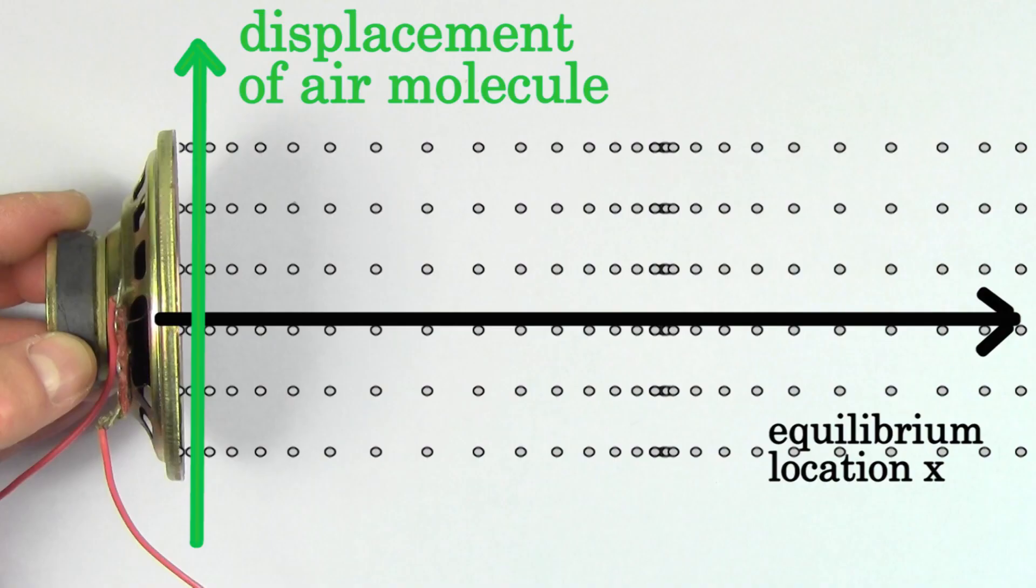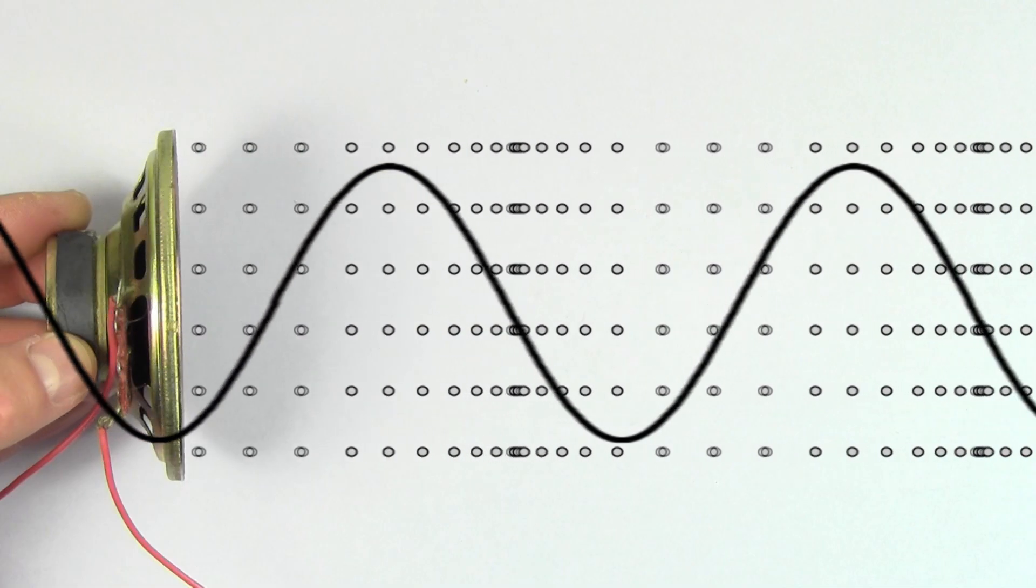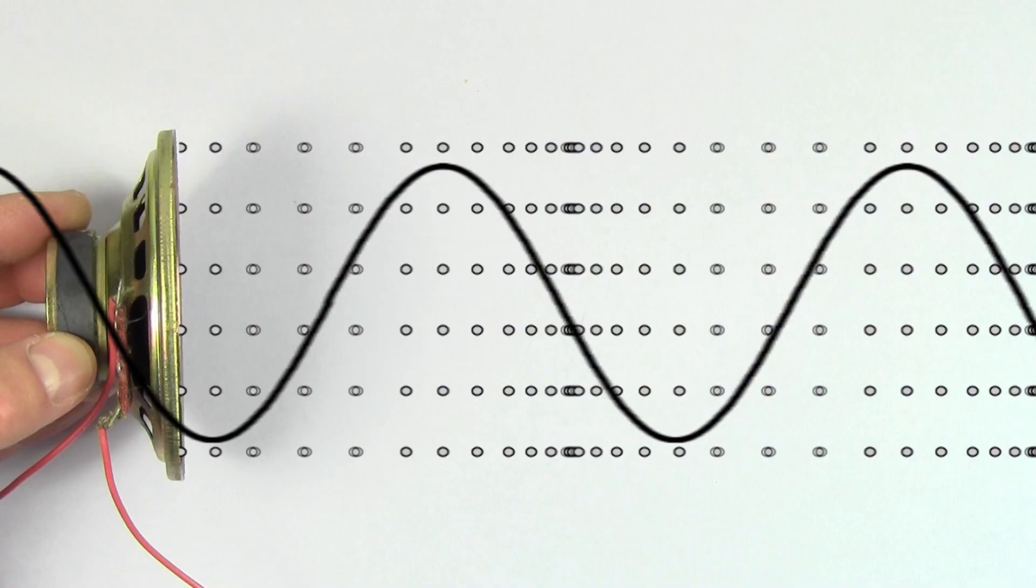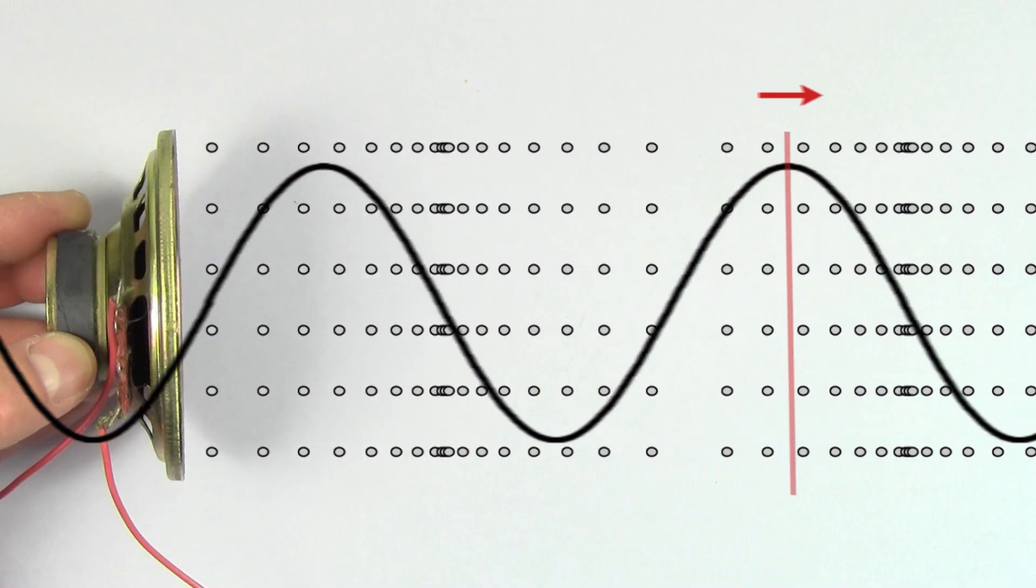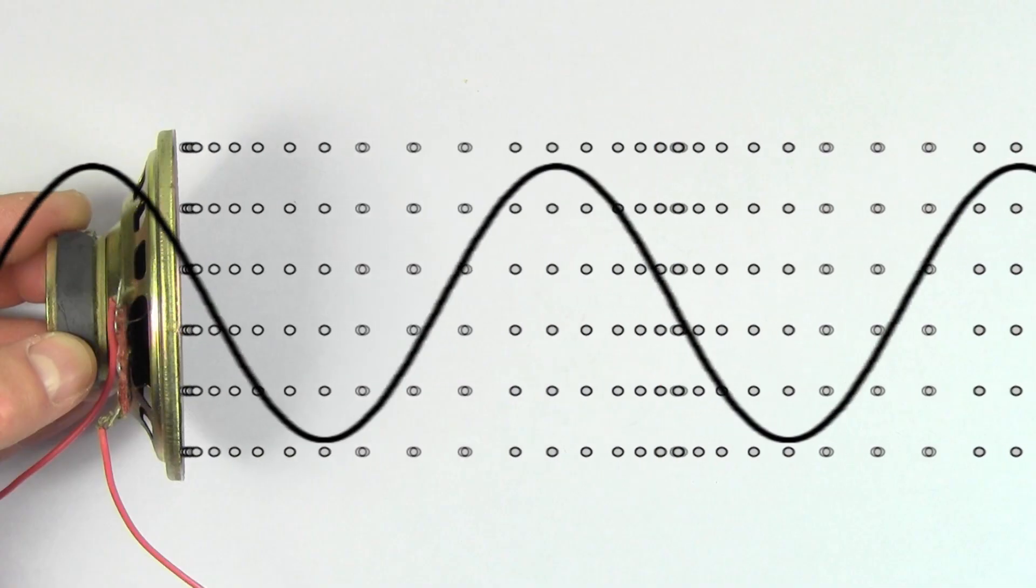If we look at a graph of the air displacement versus position of the air, we can see that as the wave travels, the shape of this wave travels to the right. So the speed of a sound wave can be found by finding the speed of the peaks, or the speed of the valleys, or the speed of any single point on the wave shape.